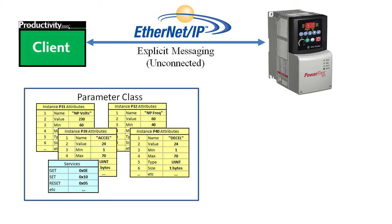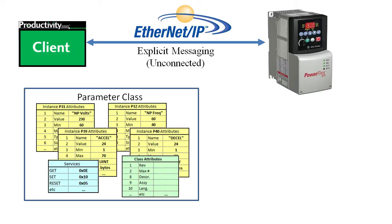There is one more template that we need — this one describes the attributes of the class itself. It tells us the revision of the class, the total number of parameters in the class, and some other things we might want to know about this group of objects. So the template describes a generic object, and a filled-in template creates a single instance of the object — like parameter 31, parameter 32, and so on.